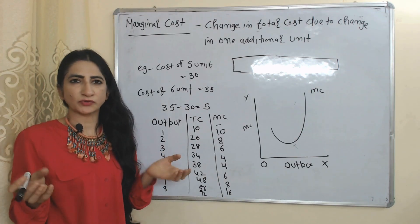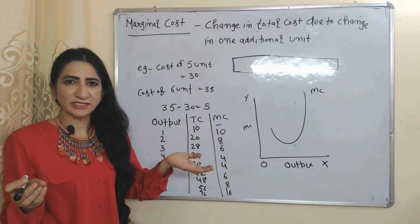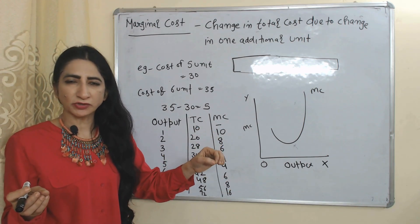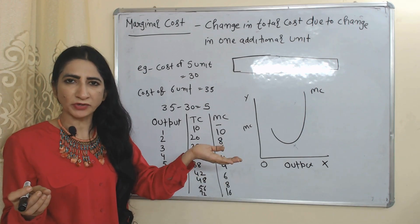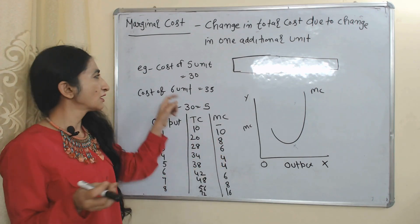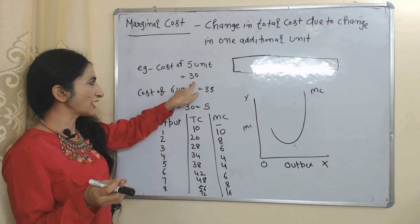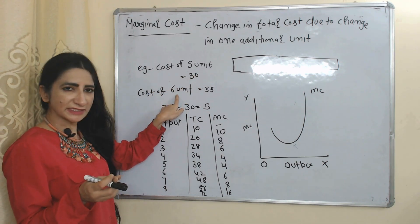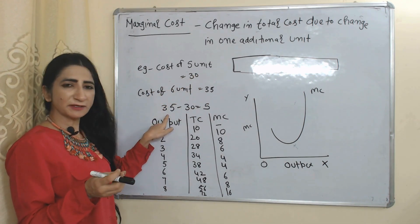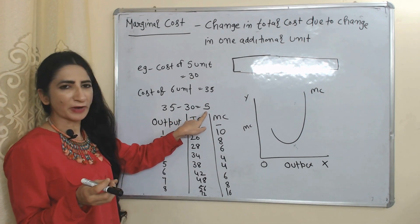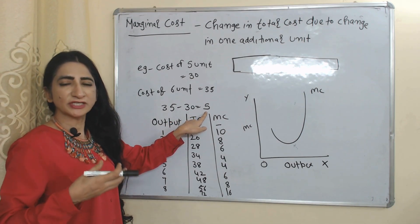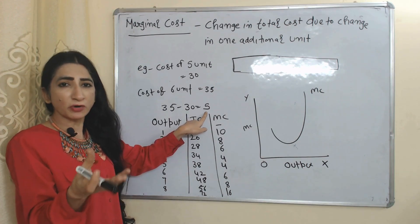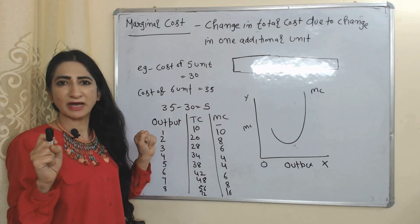Now we will look at marginal cost. Marginal cost means the change in total cost after producing one more unit. For example, if the cost of producing 5 units is 30 and the cost of producing 6 units is 35, then 35 minus 30 equals 5. This 5 is called marginal cost — the change in total cost after producing one more unit.